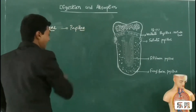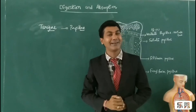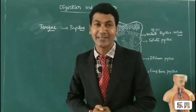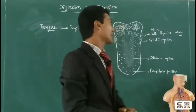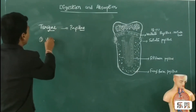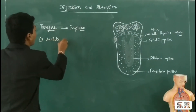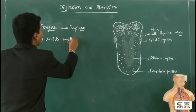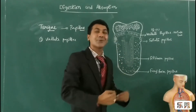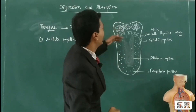So, there are several different types of papillae present in the tongue to detect different types of taste in our body. The first type is circumvallate or vallate papillae. Vallate papillae are present at the base of the tongue, which is the most inner side.